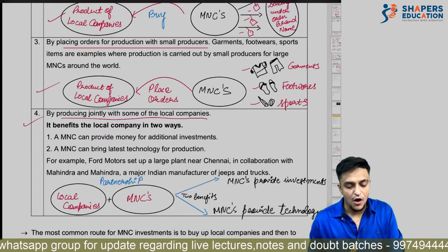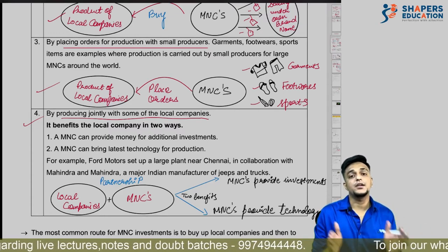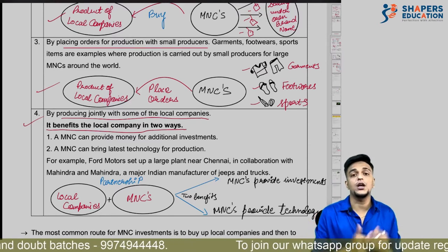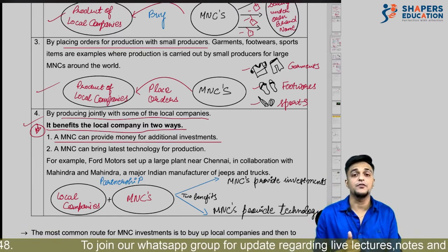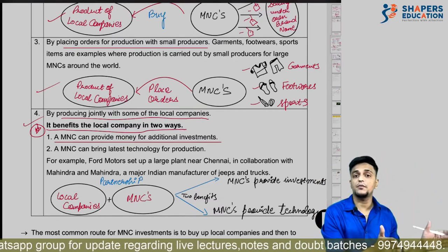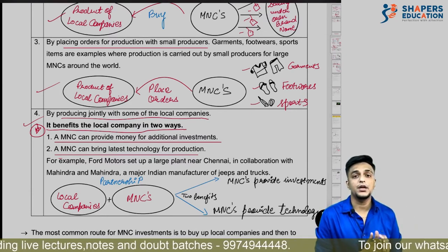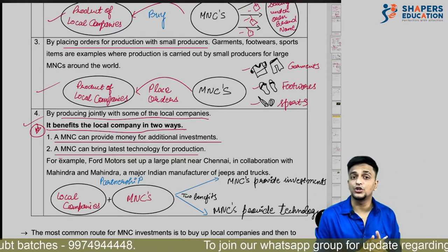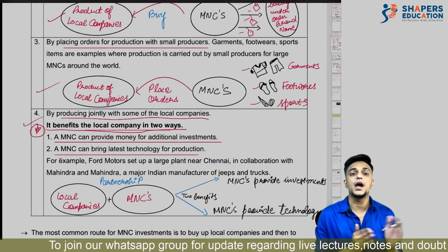Fourth way: by doing partnership or collaboration — producing jointly with local companies. For example, coming to India and partnering with a local company. Benefits to the local/domestic company: first, the MNC can provide money for additional investment; second, the MNC can bring latest technology for production. These benefits are also asked in exams.